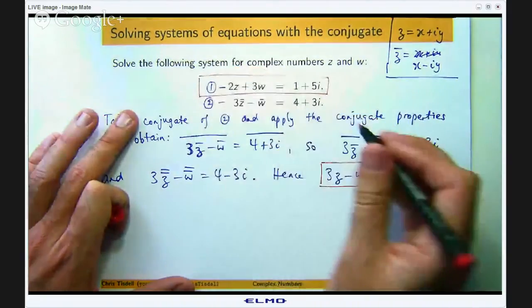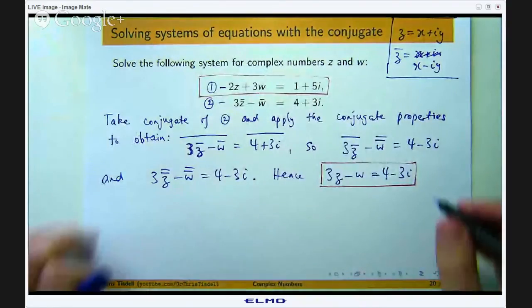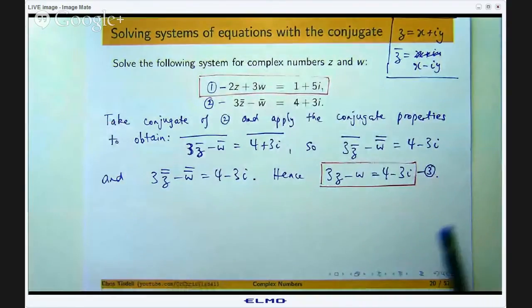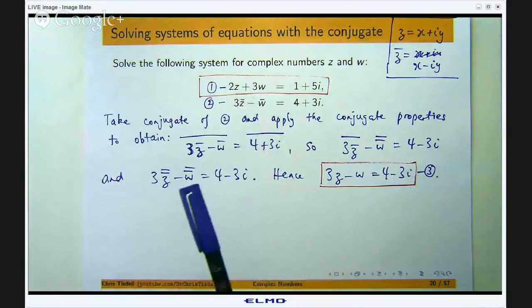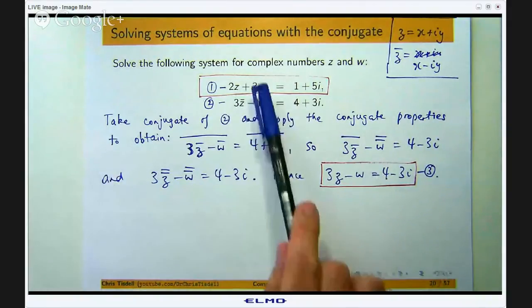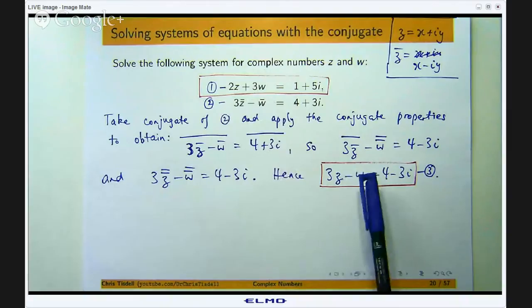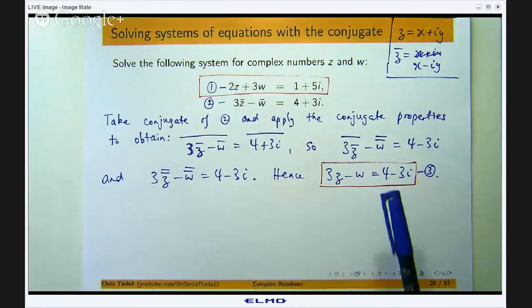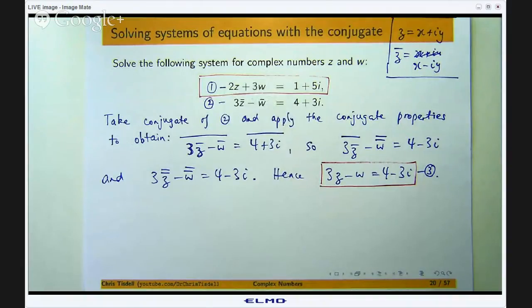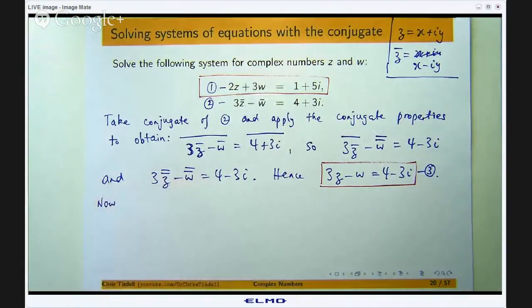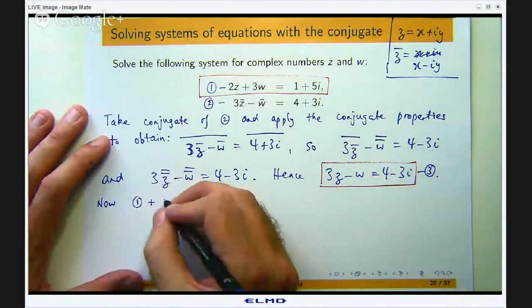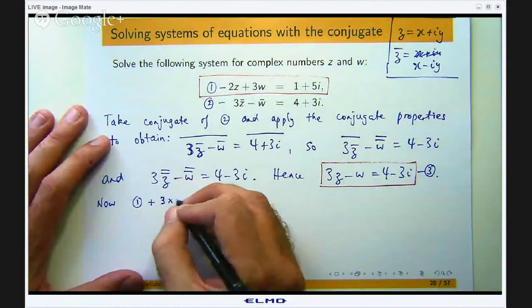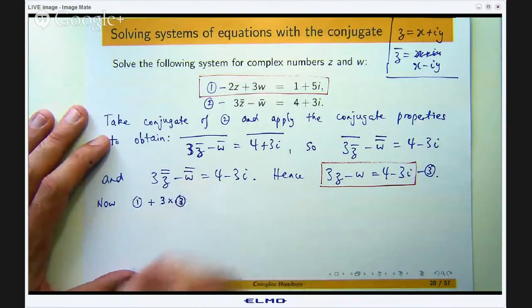So now we are going to be able to solve these two simultaneous equations or this linear system. So let us call that equation 3. Okay so let us have a look at 1 and 3. If I multiply equation 3 by 3 and I add it to 1 then you will see that the w's will cancel out. So I will just be left with z and I can isolate the z and solve.